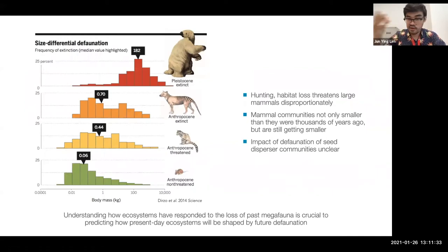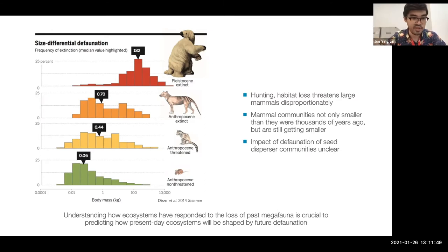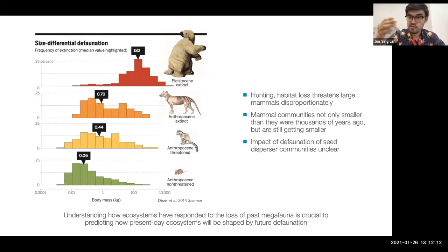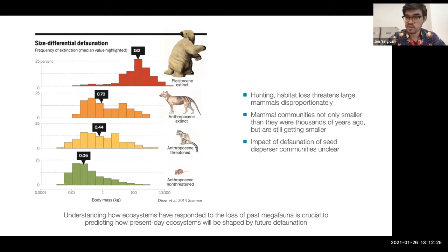One of the most characteristic things is that mammal extinctions are not random — they show a size-dependent pattern. This is partly because large-bodied animals are more threatened and more vulnerable to hunting, habitat loss, and other anthropogenic pressures. The result is that mammal communities are not just getting smaller than they were thousands of years ago, but they continue to become smaller through time. It remains unclear how this continual downsizing of animal communities will affect ecosystem processes, but we can leverage the past to understand what the future holds.